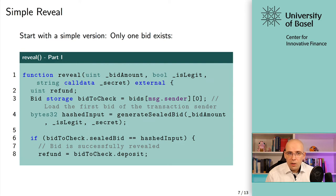Now we have the reveal function. We are going to start with a super simple version where we assume there is only one bid for any given address. We will change that later on — it will be one of your tasks to allow for multiple bids per address. But right now, our working assumption is that the struct array will only ever contain one bid per address.